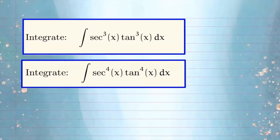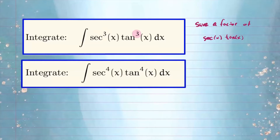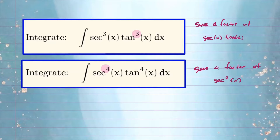Let's take a look at the first one where you have odd powers — more specifically where tangent has an odd power. If that happens, you want to save a factor of secant times tangent for the du portion, because we're going to be using u-substitution. In the second case, where you have an even power for secant, you want to save a factor of secant squared of x. That's what you want to remember when you have something like this.